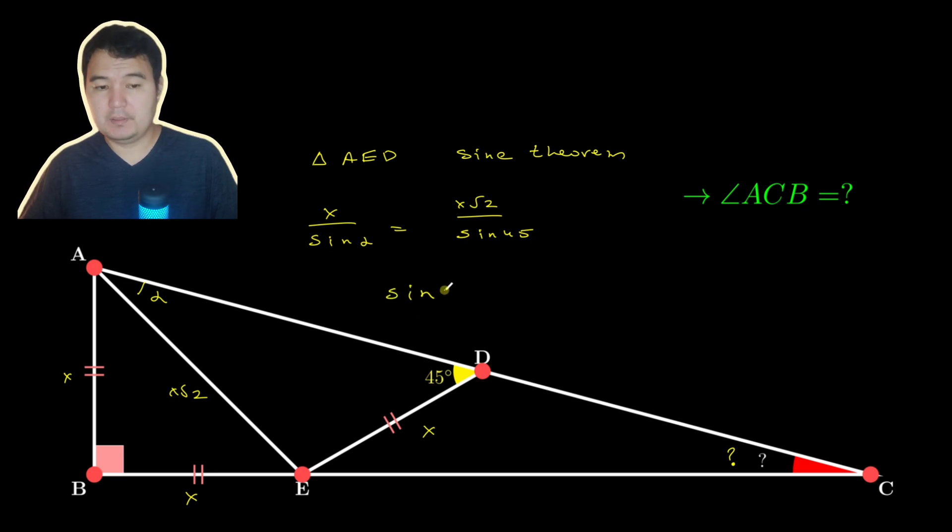That gives you sine alpha is equal to 1 over 2, which makes alpha 30 degrees. So this is 30 degrees.